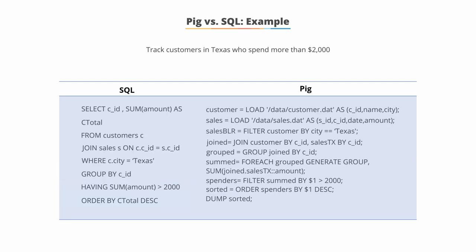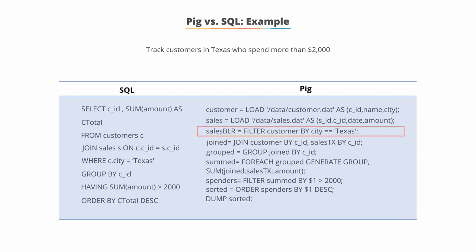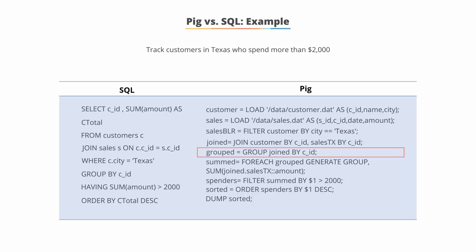Now examine the same function using Pig. In Pig, you create two entities, customer and sales, where you load equivalent data with the schema. You filter the customers based on location — in this example, Texas. Both datasets are joined using the C_ID row. The sum of the amounts for individual C_IDs is calculated. Then isolate those customers who spend more than $2,000, and sort the customers in descending order.